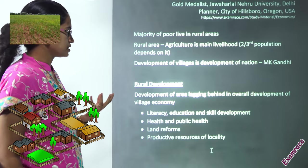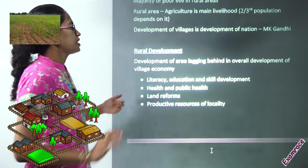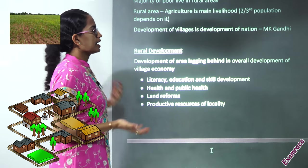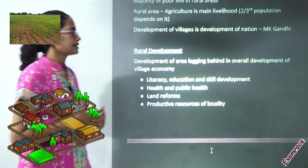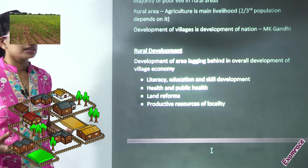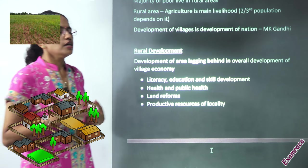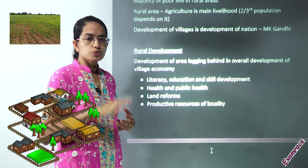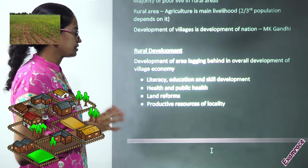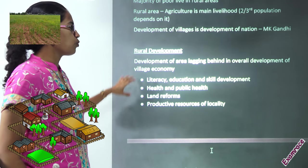Agriculture is one of the main subsistence activities for India. Mahatma Gandhi had rightly said development of village is development of nation in India. So, our focus on rural development is indeed very, very important.